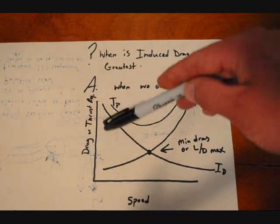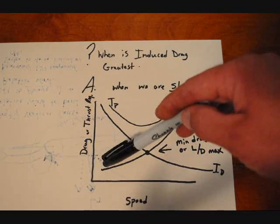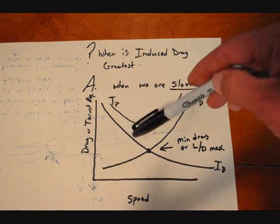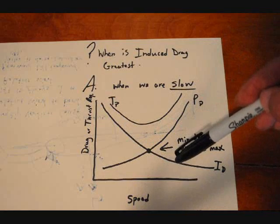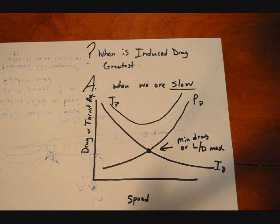As we are slow, induced drag is greatest, parasitic drag is least. And as we increase speed, our induced drag goes down. That's because our wing tip vortices decrease as we go faster.